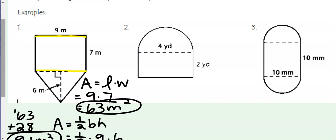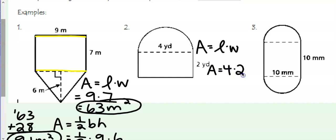For our next shape, we have a semicircle and a rectangle. The rectangle is going to be area equals length times width, where our length is 4 and our width is 2, so the area of the rectangle is 8 square yards.